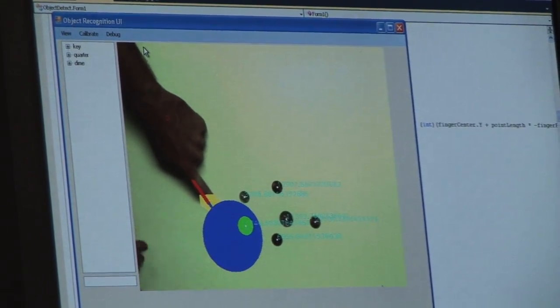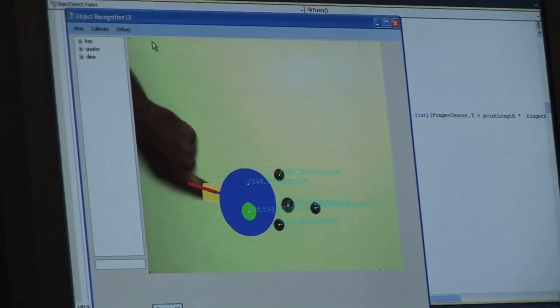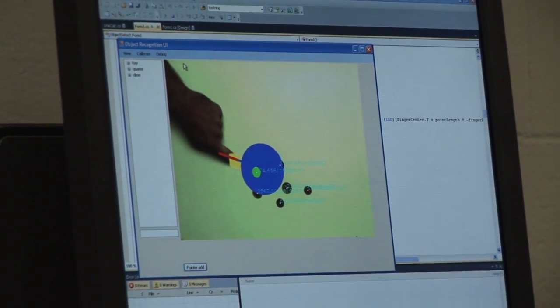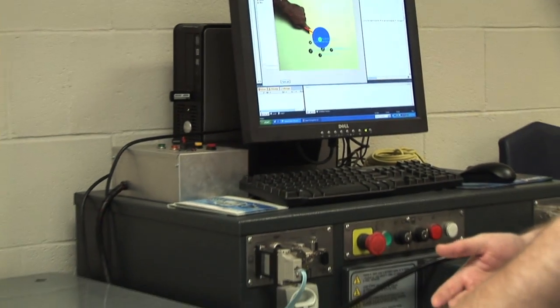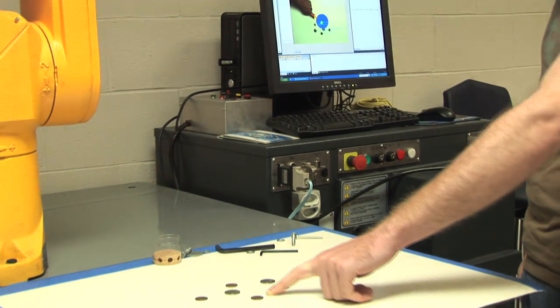It creates a triangle and the area of that triangle is basically the distance from where you're pointing to the object. So the object with the lowest distance would be the one you're pointing at.